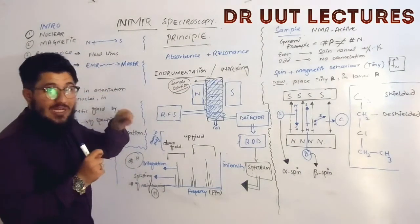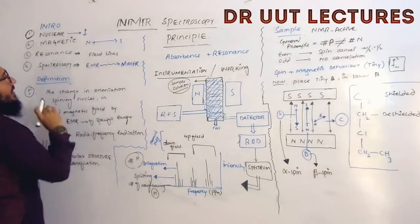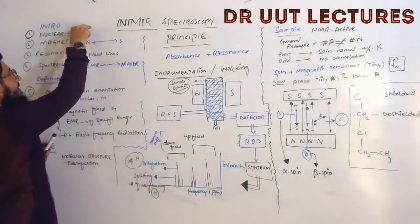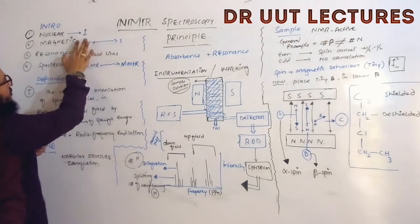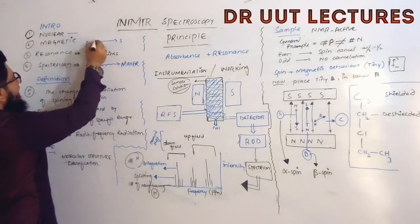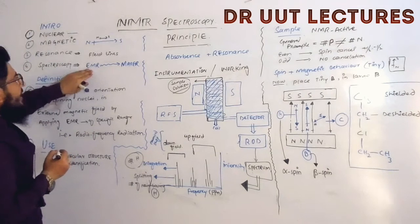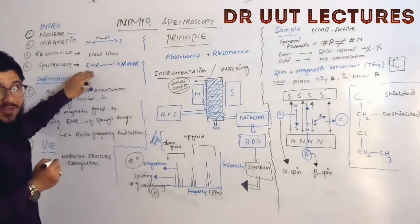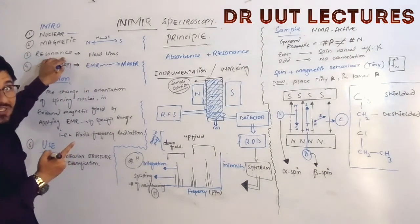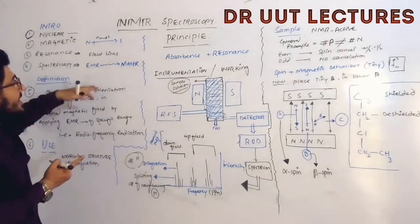We have a nuclear field line and a magnetic field line, and we are going to do the resonance — that is, we will align our nuclear field line with the magnetic field line. This alignment is done by applying electromagnetic radiation. By means of using electromagnetic radiation, we are resonating the nuclear field lines with the magnetic field lines. That's why this technique is called NMR spectroscopy.